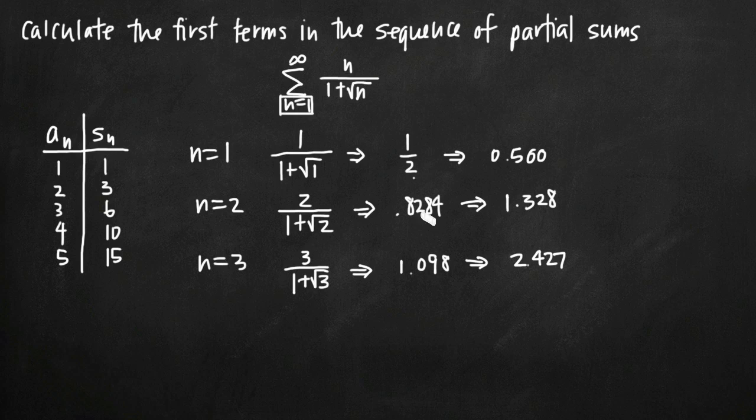So remember, the value we get here when we just plug in our value for n directly is the value of a sub n. When we add it to the previous term, we get the value in the sequence of partial sums, s sub n. So here's how we generate the values of s sub n, and we can just keep going.